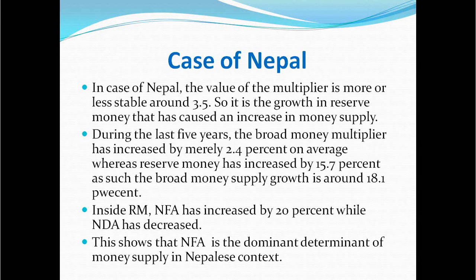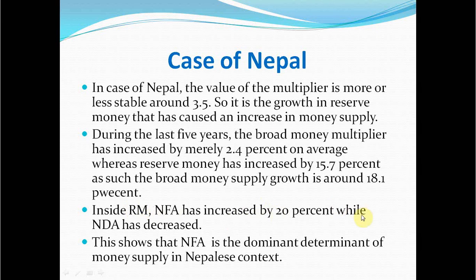In the case of Nepal, the value of the multiplier is more or less stable around 3.5, so it is the growth in reserve money that has caused an increase in money supply. During the last five years, the broad money multiplier has increased by merely 2.4% on average, whereas reserve money has increased by 50.7%, and broad money supply growth is around 80.1%. Within reserve money, net foreign assets increased by 20% while net domestic assets decreased, showing that NFA is the dominant determinant of money supply in Nepal's context.